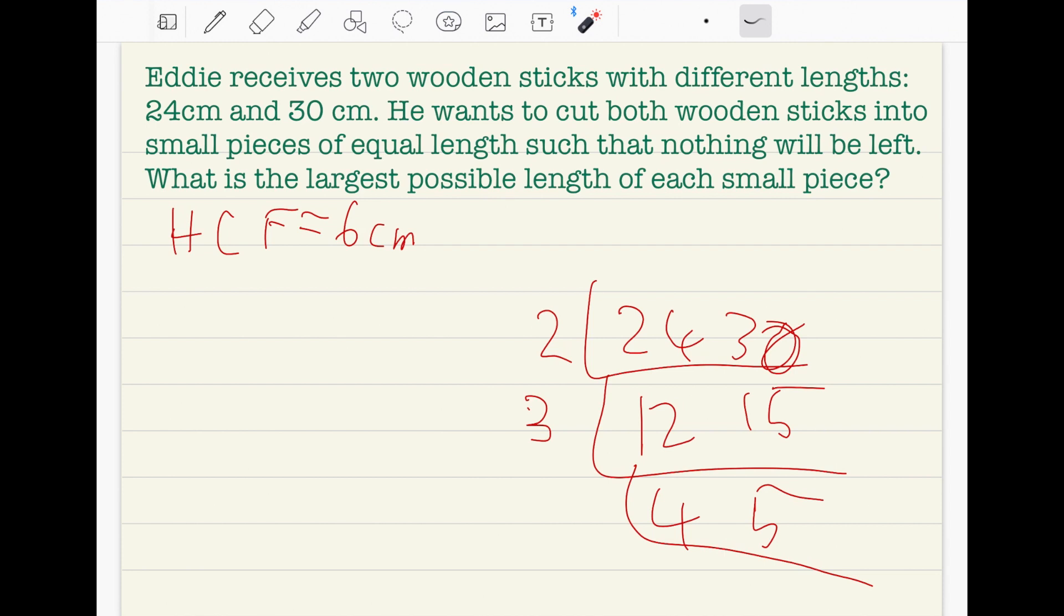Let's see what the lowest common multiple is even though I've already said bye to it. Three times two equals six, four times five equals 20, and 20 times six equals 120. So the lowest common multiple for 24 and 30 cm is 120.